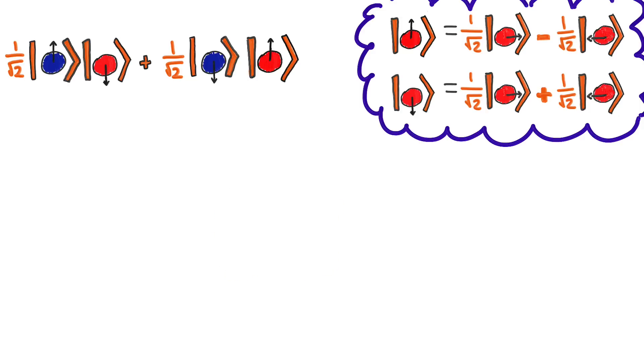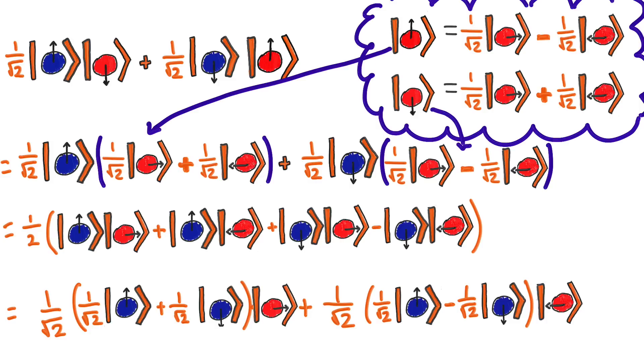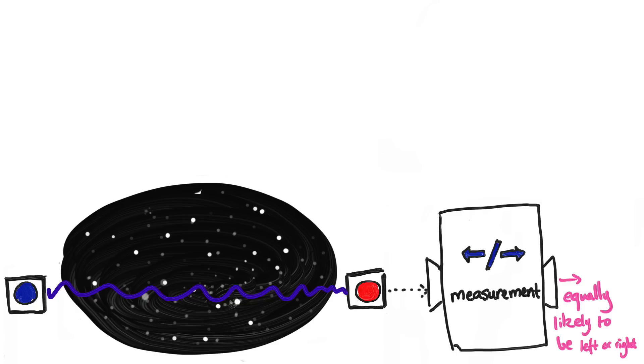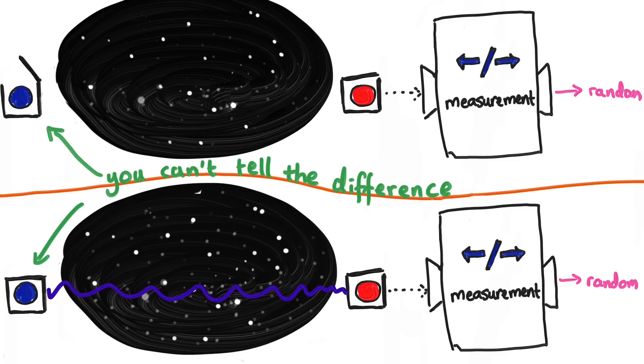Okay, so here's the maths. All I've done here is subbed in these expressions. Then I'm grouping up the left and the right options for Bob's particle, and then you can see that both of these options have the same weight, and so they're both equally likely. What this means is, if Bob measures his particle for left or rightness when Alice hasn't measured, the particle is equally likely to go left or right, which is the same as if she had measured, and so you can't tell the difference. Hence, you can't communicate faster than light.